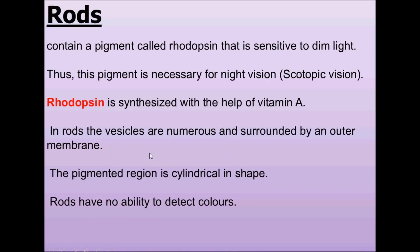Hello students, my name is Neeraj and thanks for watching EduPedia videos. My topic for this presentation is photoreceptors. In this section we will be studying that the retina is the innermost layer of the eye, which I have already taught you. It contains a layer of photoreceptor cells, and photoreceptor cells are of two types: first are rods and second are cones.